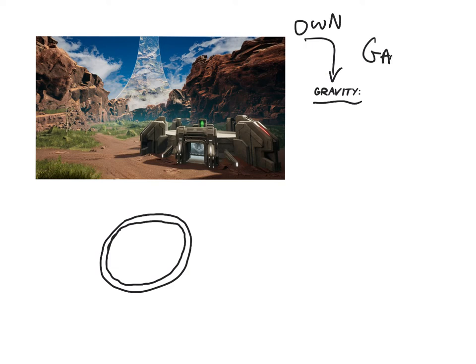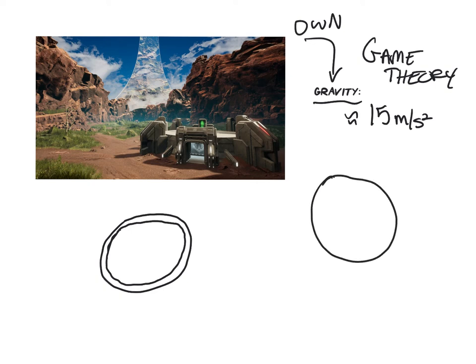The guy from Game Theory, Mat Pat, actually did a video where he calculated the actual gravitational acceleration of the halo ring, and he calculated using pixel measurements that it's approximately 15 meters per second squared. Remember, every celestial object actually has its own gravitational acceleration or gravitational pull. Earth's gravitational acceleration is approximately 10 meters per second squared. So this halo ring is generating its own gravity, and it's roughly a little bit larger than planet Earth's.